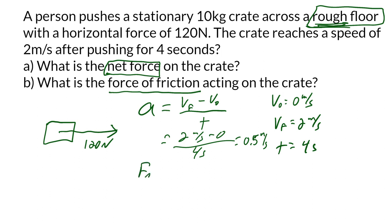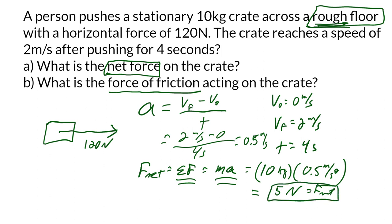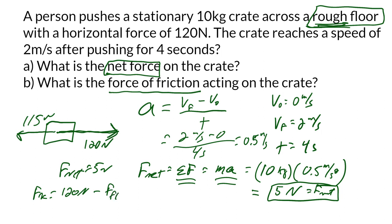Now we find the net force using mass times acceleration: 10 kilograms times 0.5 meters per second squared gives us a net force of 5 newtons. So if we have 120 newtons applied to the right and the net force is only 5 newtons, that means there must be 115 newtons of friction. In other words: 120 minus the force of friction equals 5 newtons, so the force of friction is 115 newtons.